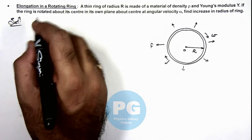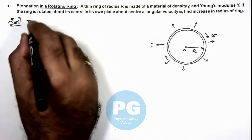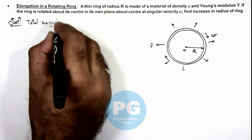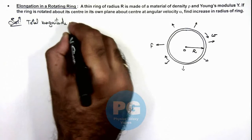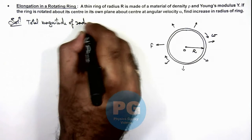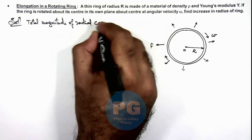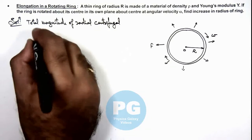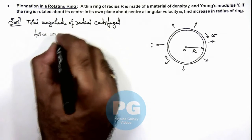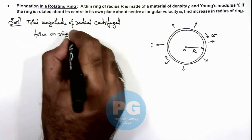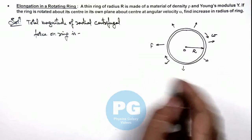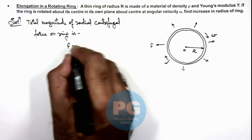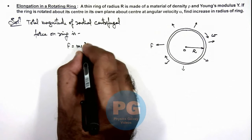So we can write the total magnitude of radial centrifugal force on ring. If we calculate the scalar magnitude, as vector sum is always zero, this force can be given as m ω² R.